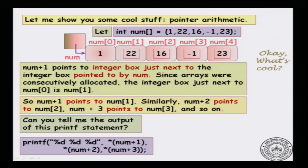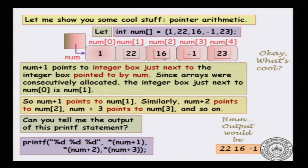Similarly, num plus 2 is the box 2 positions away from the first box in the array — that is num[2] — and get the value there, which is 16. Similarly, *(num+3) will give you -1. So the output would be 22, 16, -1.